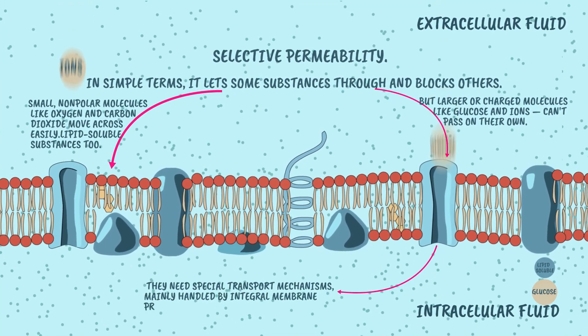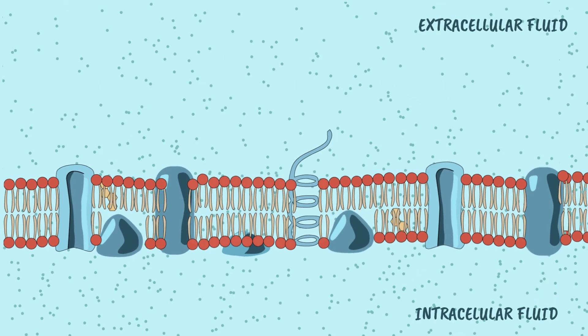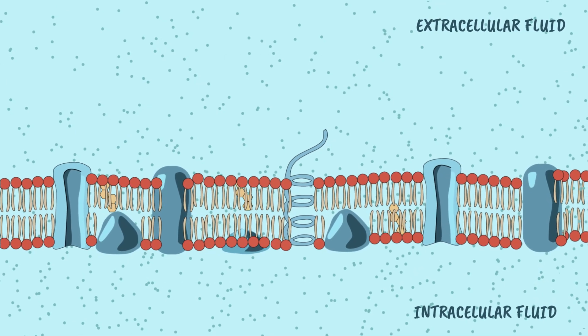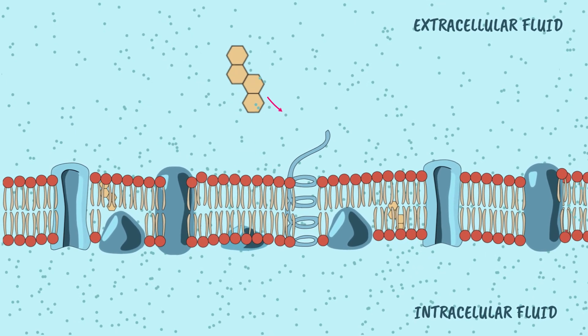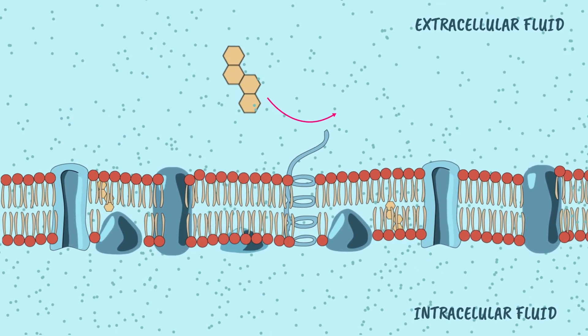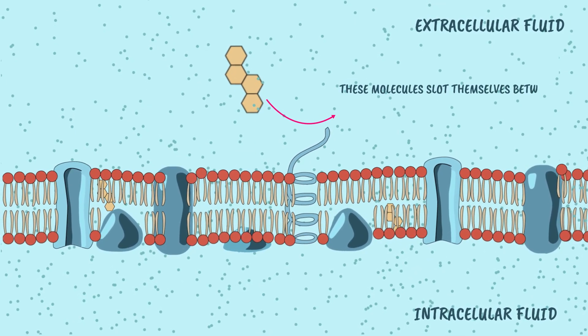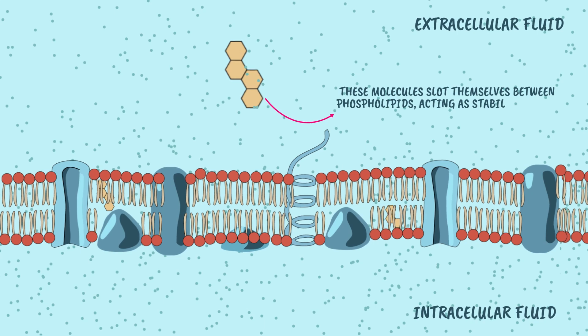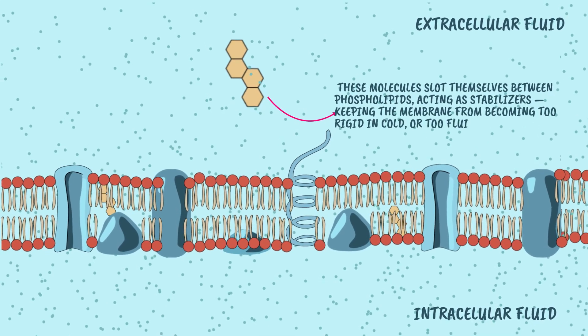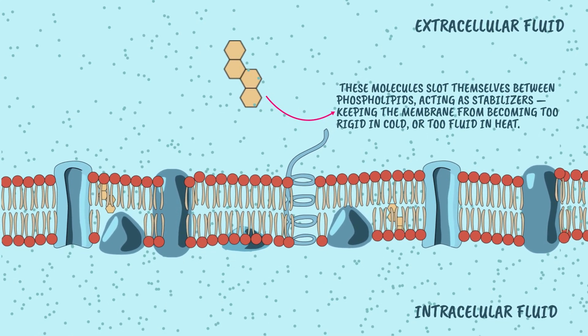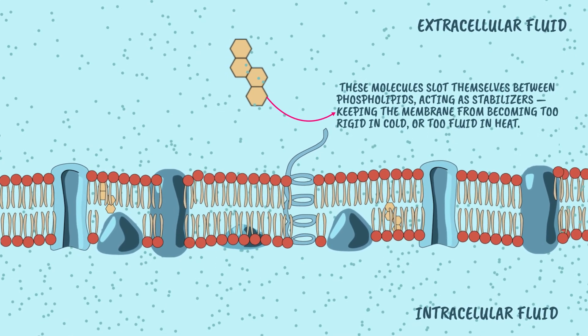The membrane isn't just made of phospholipids — it's also packed with cholesterol molecules. These slot themselves between phospholipids, acting as stabilizers, keeping the membrane from becoming too rigid in cold or too fluid in heat.